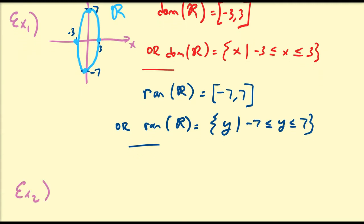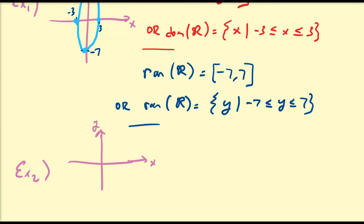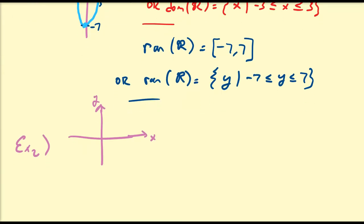Let's assume we have another type of shape. So let's assume our curve now looks like this — this is what we call a hyperbola. Let's assume the minimum value is five and the corresponding value is negative five, and it goes infinitely in both the left and right directions, as indicated by the arrows.